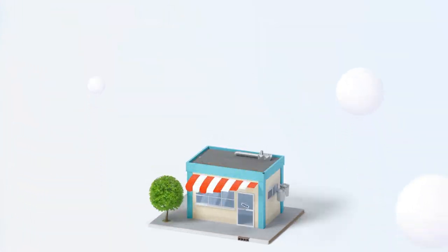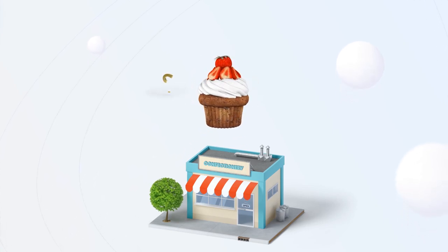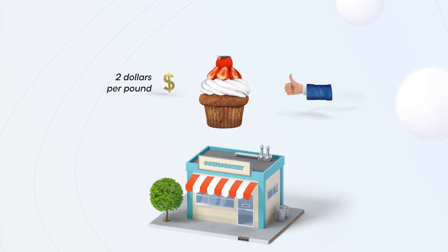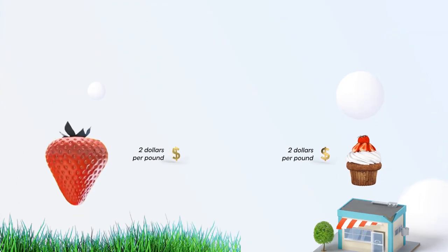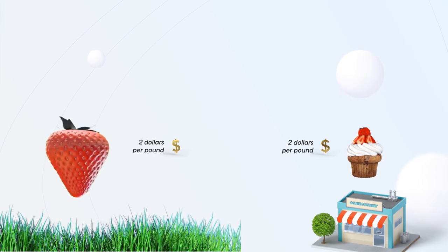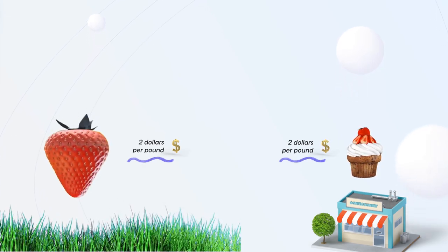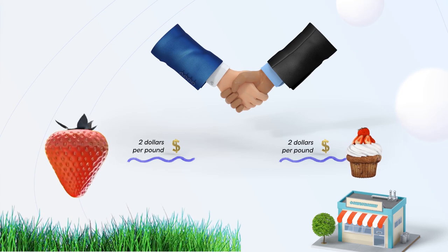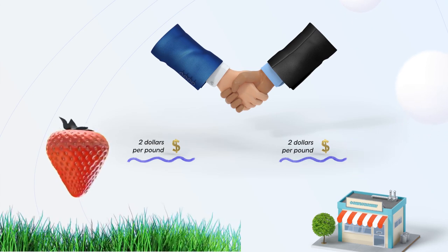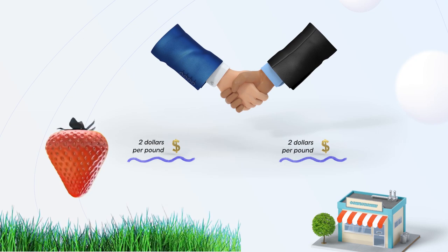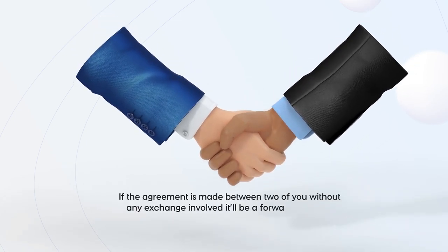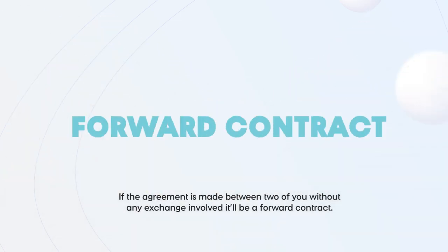You have a friend who owns a confectionery famous for their strawberry cakes. She also likes the price of $2 a pound, because if strawberries are more expensive in June, she will have less profit from every cake. Both of you agree that losing potential gains is not worth risking your businesses. That's why you make a contract in March, specifying that in June your friend will buy 20,000 pounds of your strawberries for $2 a pound, no matter what the market prices would be. If you make this contract on the exchange, it's called a futures contract. If the agreement is made between the two of you without any exchange involved, it'll be a forward contract.